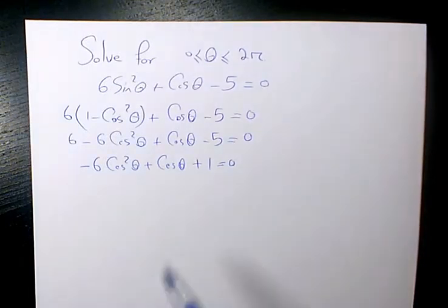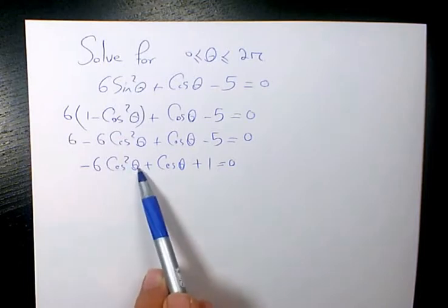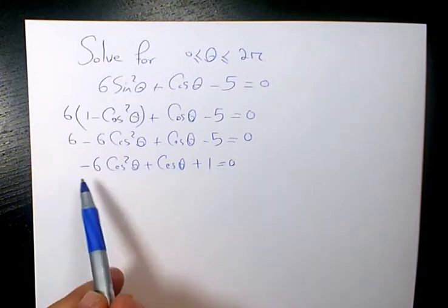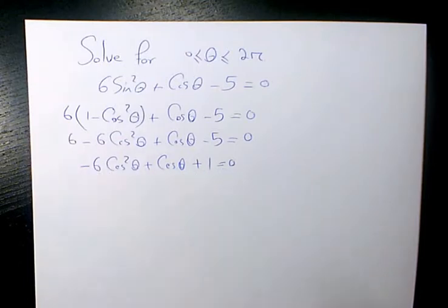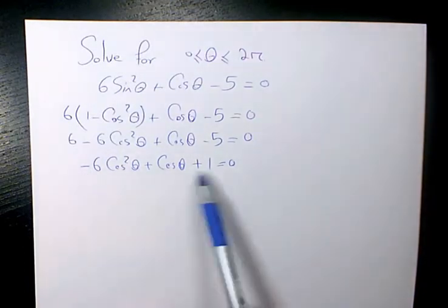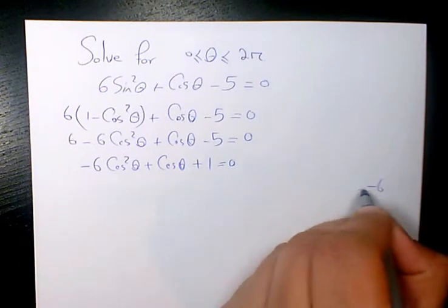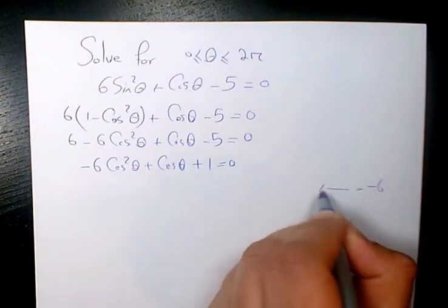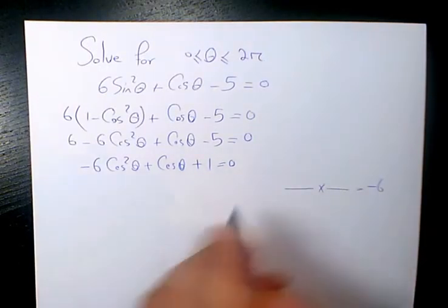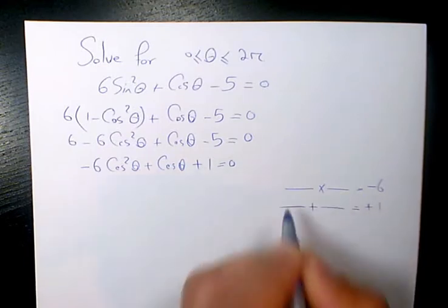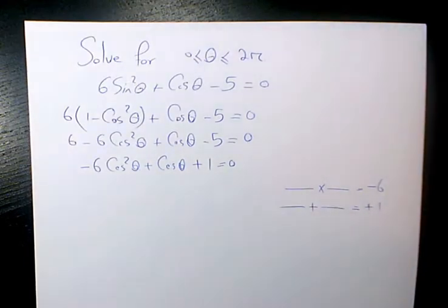Now I have negative 6 cosine squared theta plus cosine theta plus 1 equals to 0. I need to use the AC method to solve this. Negative 6 times positive 1 is going to be negative 6, and here I have positive 1 as the middle coefficient.